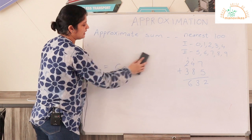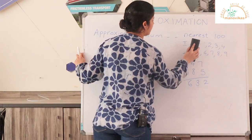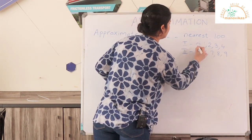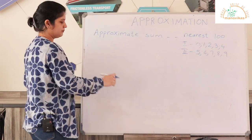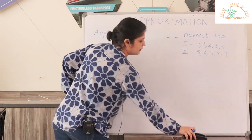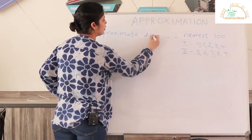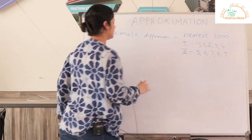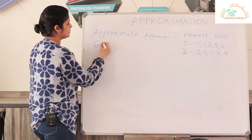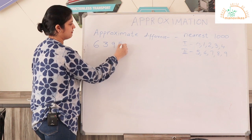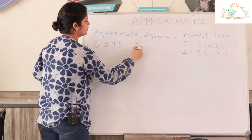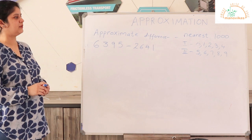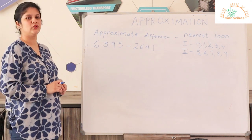Now let's move to questions 7, 8, and 9. Here, instead of finding the sum, you are asked to find the difference, which means you subtract the two numbers. I will show you an example where we find the approximate difference of two numbers, say rounding to the nearest thousand. We have 6,395 minus 2,641. We have to find the difference between these two numbers by rounding them up to the nearest thousand. So we underline the thousands place.